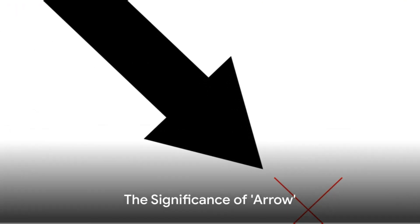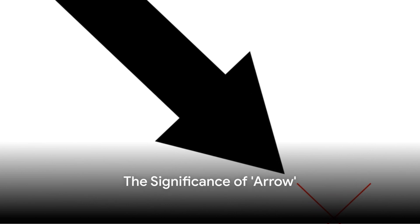Seventh, we have arrow. A noun, it is a weapon that is shot from a bow, or a symbol used to show direction. The arrow pointed towards the exit.